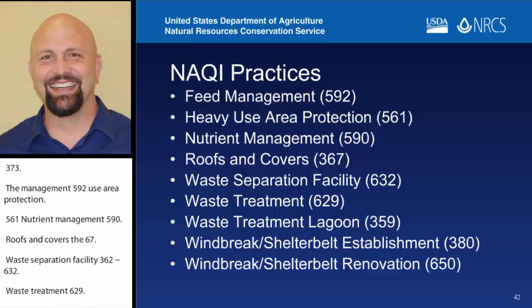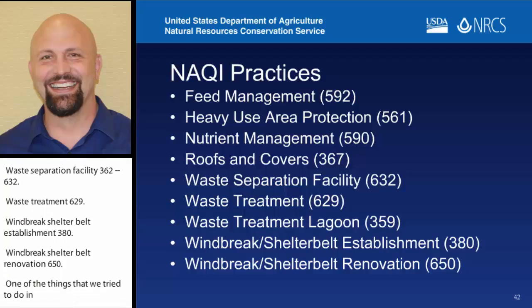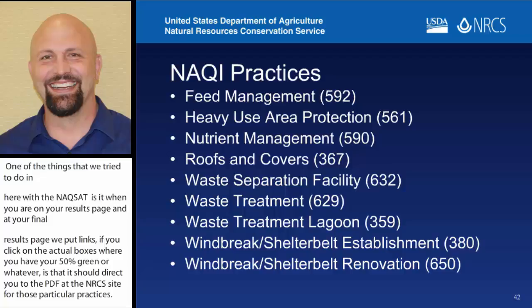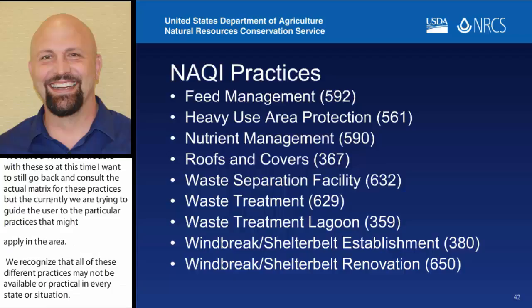One of the things we tried to do with NACSAT is that when you're on your results page at your final results page, we put links — if you click on those actual boxes where you have your 50% green or whatever — that should direct you to the PDF at the NRCS site for those particular practices. We've had a little bit of trouble with these, so at this time I would still say go back and consult the actual matrix for these practices, but currently we're trying to guide the user to the particular practices that may apply in their area. We recognize that all these different practices may not be available or applicable in every state or every situation, but we give all the potential options and then we're counting on the agents to actually know what is applicable in their particular region.